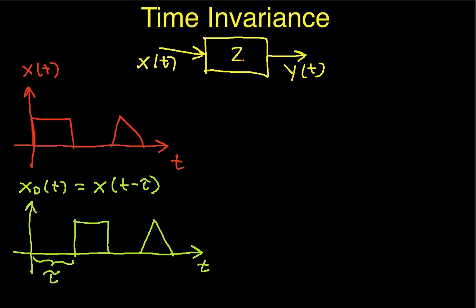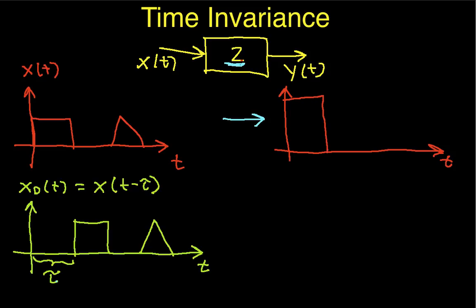So let's put these two signals through this system that multiplies everything by 2 and see what we get. For the first signal, everything gets multiplied by 2, so it's going to look something like this. The rectangular pulse is the same duration but gets taller — it has a higher amplitude. The triangular pulse is also the same duration but gets taller. So this is y(t), the output due to this input.